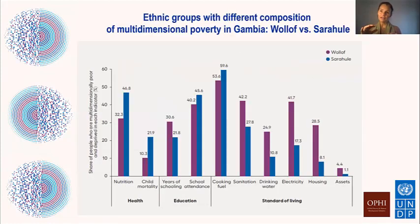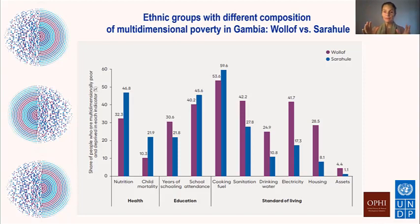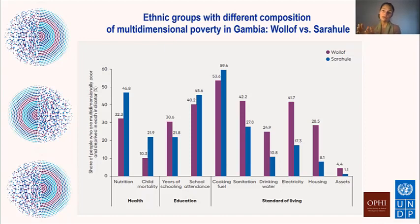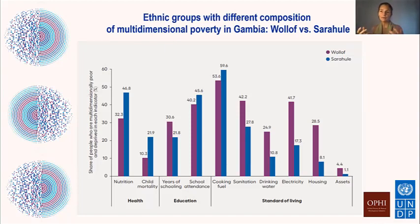It's not just the level of poverty — it's what needs to be done to end poverty. In Gambia, the Wolof and Sarahul have about the same level of MPI, but the Sarahul show higher deprivation in nutrition, child mortality, children out of school, and solid cooking fuel, while for the Wolof it's other indicators. So what needs to be done to support each group is information the MPI can at least partially provide.